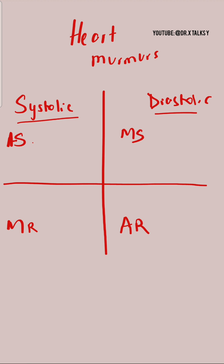The next step is that the aortic valve and pulmonary valve look alike, so you can associate them together. So AS can be associated with PS, and AR with PR. Likewise, the mitral valve looks like the tricuspid valve, so MS can be associated with TS, and MR can be associated with TR.